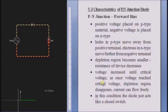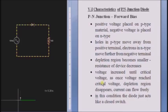In this session, we are going to learn about V-I characteristics of a P-N junction diode. First, we will go with forward bias — P-N junction forward bias condition.